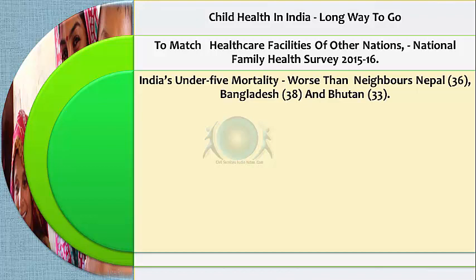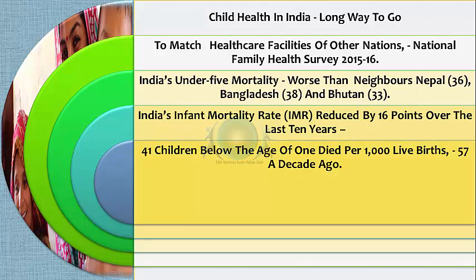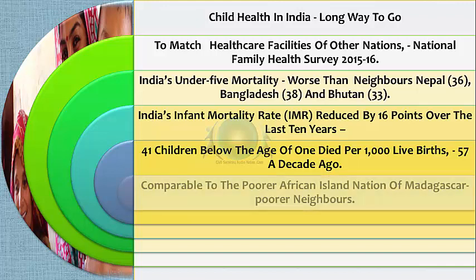Nepal's under-five mortality rate is 35, Bangladesh's is 38, and Bhutan's is 33, compared to India's figure of 41. India's infant mortality rate has been reduced by 16 points over the last 10 years — 41 children below age one died per 1,000 live births, down from 57 ten years prior. However, India's infant mortality rate of 41 is still comparable to poorer African island nations like Madagascar, and higher than countries such as Bangladesh, Nepal, Rwanda, and Botswana.